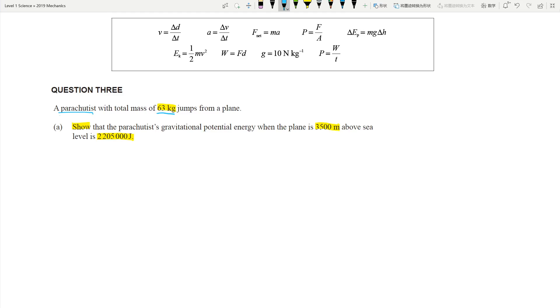For this particular question, you need to look at the idea of a parachutist with a total mass of 63 kilograms. Let's highlight these now. So 63 kilograms, the person is 3500 meters above ground, and that is the answer. When they say show the answer, the answer is given to you. You just need to calculate to prove that the answer is what they told you.